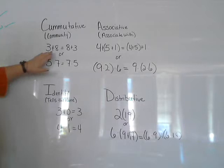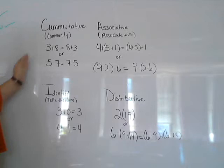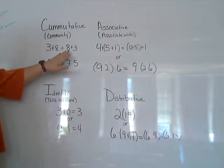One way I like to remember this is that they're in a community. They're a group of numbers, but they can be mixed up and they're still the same community. So 3 plus 8 will equal the same amount as 8 plus 3.